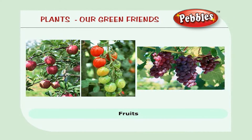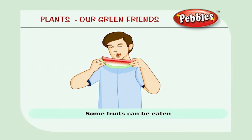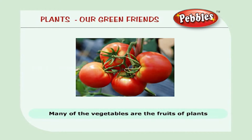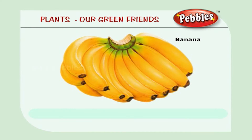Fruits. In most plants, fruits are formed from flowers. They grow from a tiny part of a flower called the ovary. Some fruits can be eaten and they are called edible fruits. Some are inedible and we cannot eat them. Many of the vegetables that we eat are the fruits of plants. Some edible fruits are pears, apple, banana, mango.